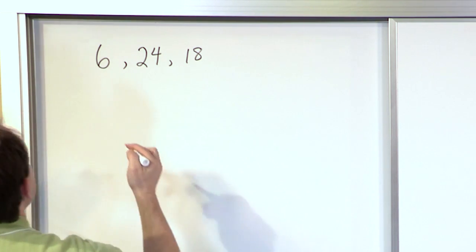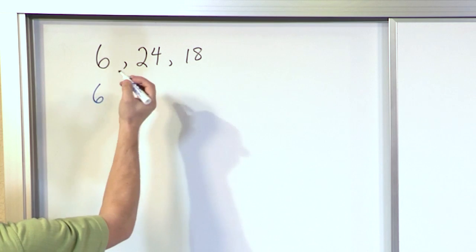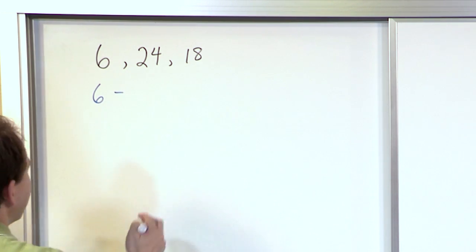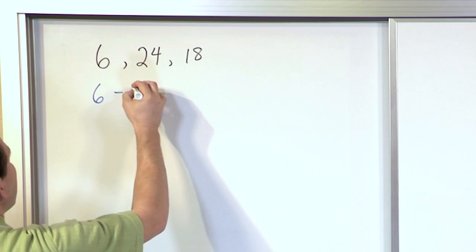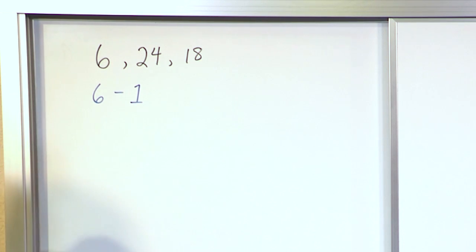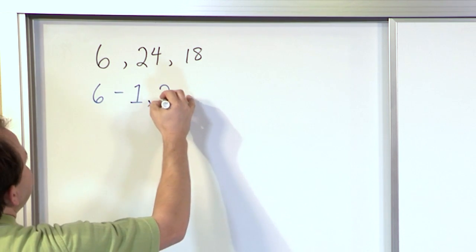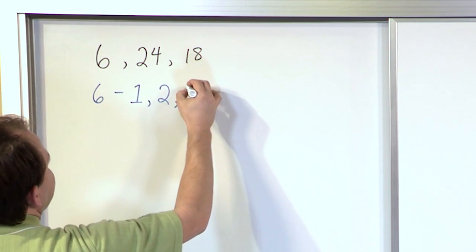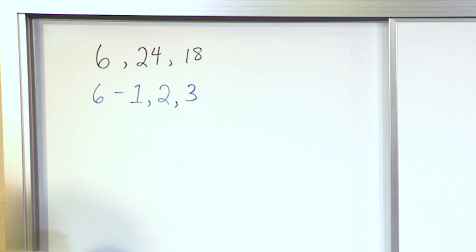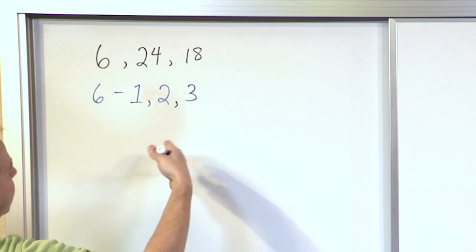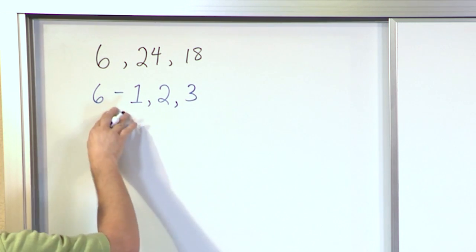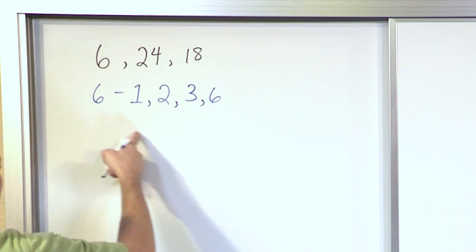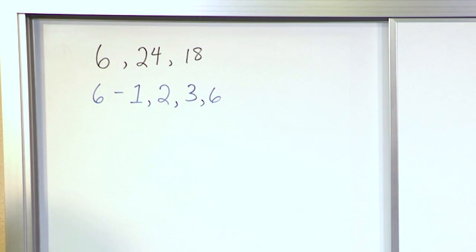The first thing you'd do is write down your first number, which in this case is 6, and write down the factors. Number 1 is always a factor because it can divide evenly into 6. Number 2 is a factor because 2 times 3 is 6. Number 3 is a factor because 3 times 2 is 6. 4 and 5 are not factors because they cannot be divided evenly into 6, but the number itself is always a factor.